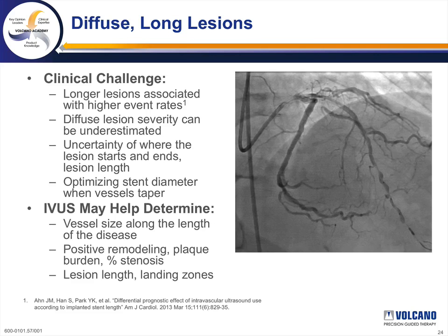How do we face the clinical challenge of diffuse lung lesions? With higher event rates, more uncertainty regarding stent placement angiographically, and the need to optimize stent diameters over long vessel segments, intravascular ultrasound can assist in pre-stent planning — allowing us to choose stent sizes and lengths that cover the entire extent of significant disease while providing optimal stent expansion and minimizing stent edge effects, which may in the long run lead to lower event rates and improved treatment of angina.